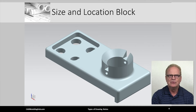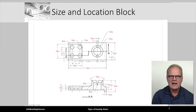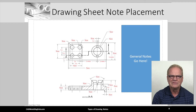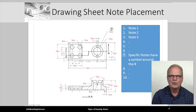This is the same block we used in the video lecture that covered the size and location dimensions. You should be able to identify this image as the 2D drawing views of our size and location block. It is generally considered good practice to keep the views and dimensions clear from the right-hand side of the drawing sheet, reserving this area for the placement of notes. In industry, notes are grouped and placed wherever there is unused open white space. However, for assignments submitted in this class, make sure the notes are placed in the blue region illustrated here.